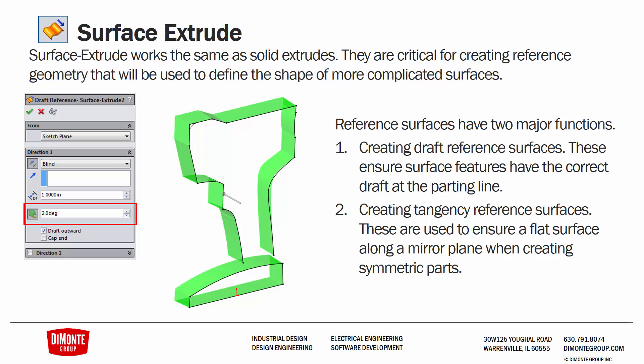Reference surfaces have two major functions. The first is when creating drafted parts — plastic parts or cast parts that need to have draft as they meet the parting line. We can use the draft reference surface to make surfaces that end at the parting line tangent to this draft reference surface such that they have the right amount of draft. To do that, we need to turn on this draft feature here so that the surface has built-in draft.